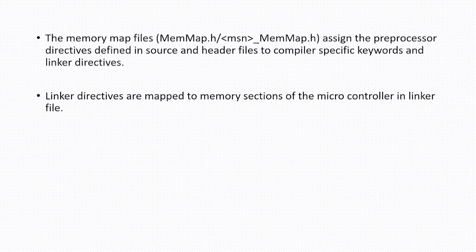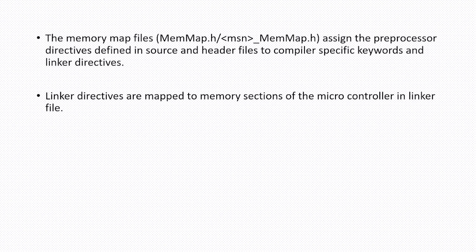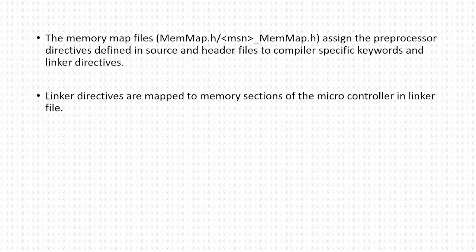So essentially, the memory map files map the preprocessor directives defined in source and header files to compiler-specific keywords and linker directives. The linker directives are responsible for allocating those sections to a particular memory region. Let's see this with an example.